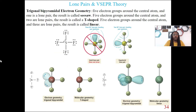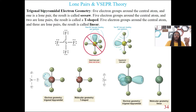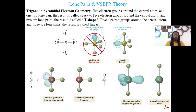Let's talk about trigonal bipyramidal electron geometry — this is when we have five electron groups around the central atom. The lone pair is on the equatorial position, on the side, not the top. If you have five electron groups around your central atom but two are lone pairs, you get a T-shape. In this example with BrF3, the two lone pairs are in the equatorial positions. So the electron geometry is trigonal bipyramidal — five electron groups — however the molecular geometry, when we're just talking about the atoms, is actually T-shaped.